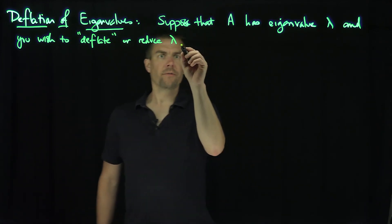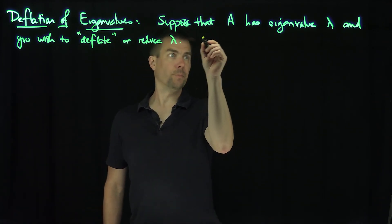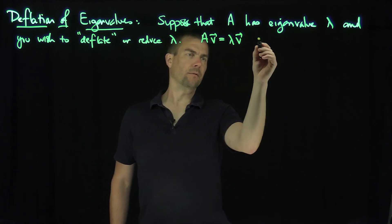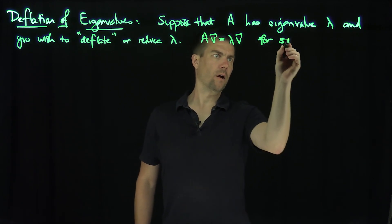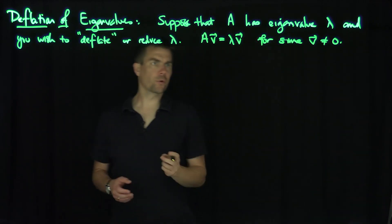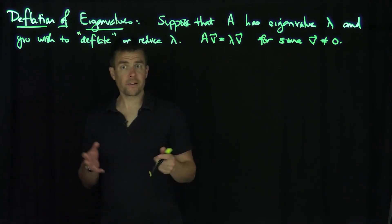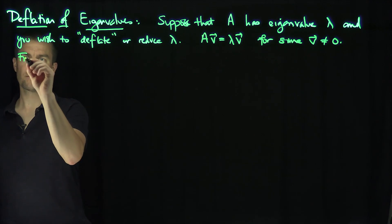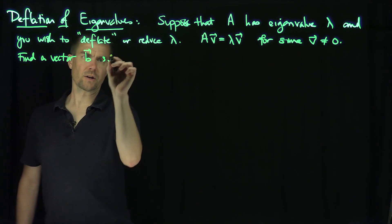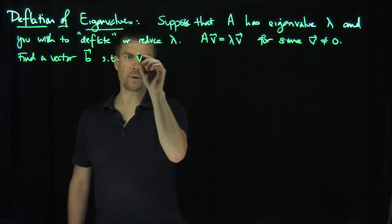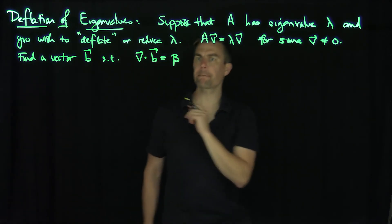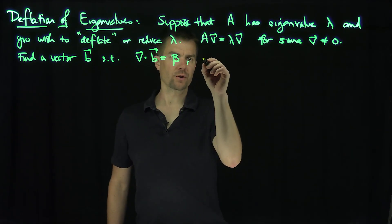Here's the procedure. Suppose we know that Av = λv for some non-zero eigenvector v. What we're going to do is find a vector b such that v dot b is equal to beta, where beta is any arbitrary number.